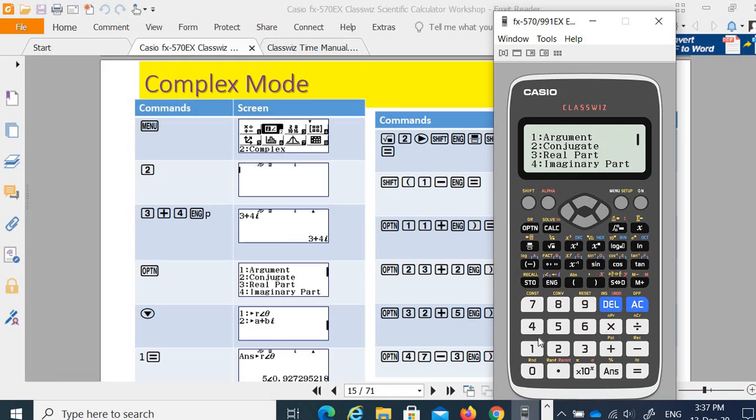Let's say number 4, imaginary of 2 minus 3i. It gives you negative 3. Argument actually gets an angle. Argument of this one.